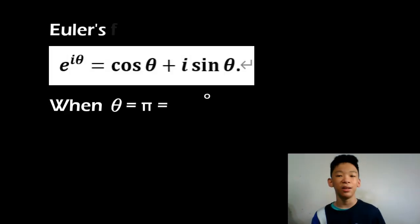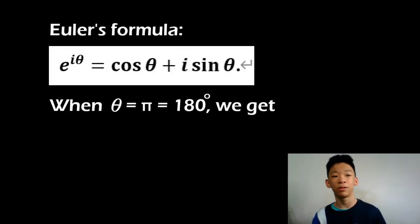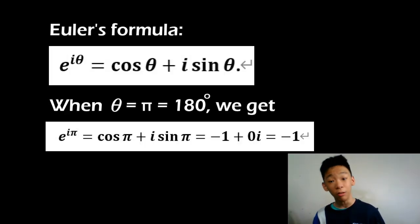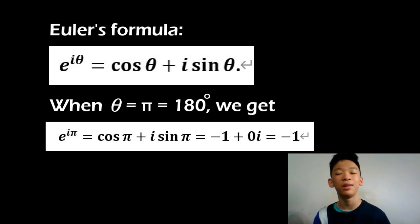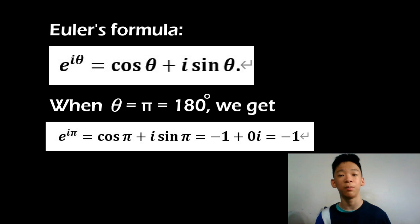Euler's identity is actually a special case of the general form, which is often known as Euler's formula: e to the i theta equals cosine theta plus i sine theta.